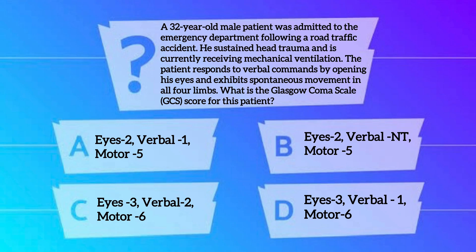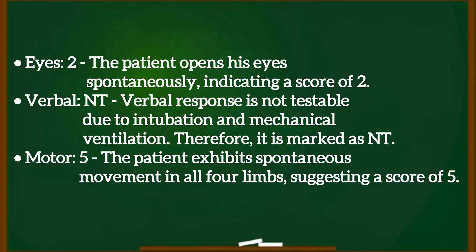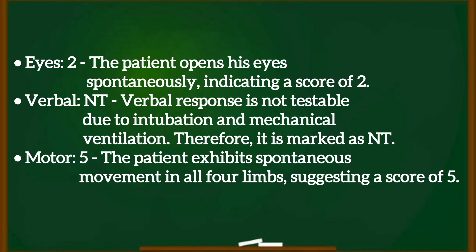The correct option is Option B: Eyes 2, Verbal 1, Motor 5. Eyes 2 is given because the patient opens his eyes to verbal commands, indicating a score of 2. Verbal is NT (not testable) due to intubation and mechanical ventilation, therefore it is marked as NT. Motor 5: the patient exhibits spontaneous movements in all 4 limbs, suggesting a score of 5.